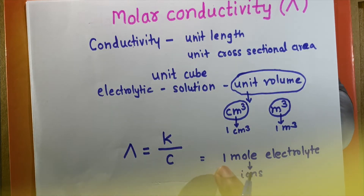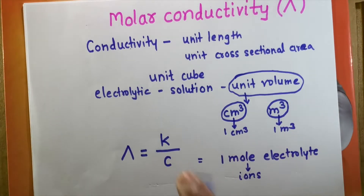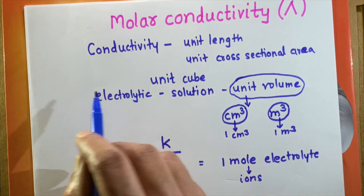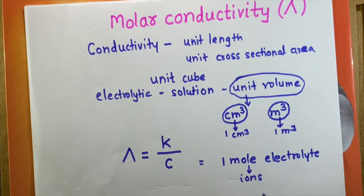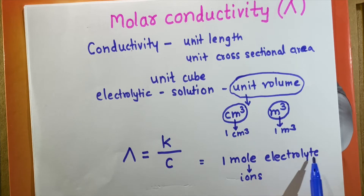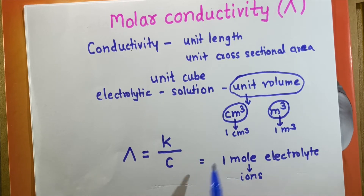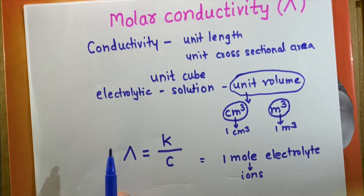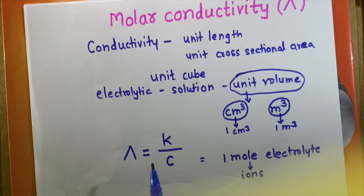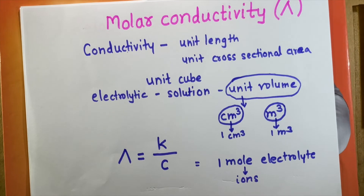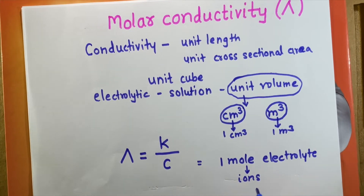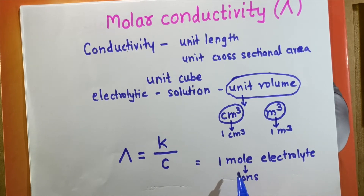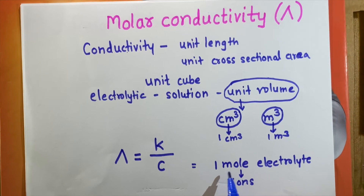If the number of ions produced by one mole of the electrolyte is more, then the molar conductivity will be more. If the number of ions is less, the molar conductivity will be less — it depends upon the extent of ionization. If it is a strong electrolyte, the molar conductivity will be more. If it is a weak electrolyte, the molar conductivity will be less.